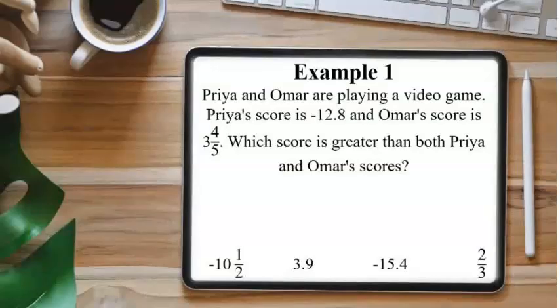Now, let's try two examples. The first example says Priya and Omar are playing a video game. Priya's score is negative 12.8, and Omar's score is three and four fifths. Which score is greater than both Priya and Omar scores?